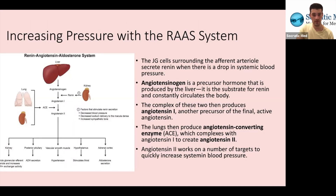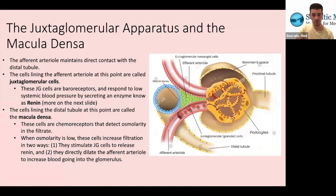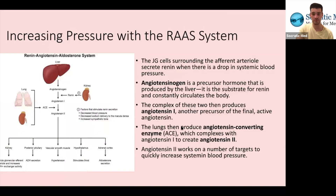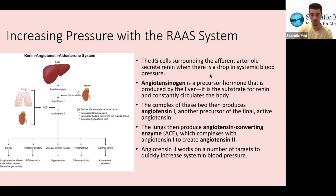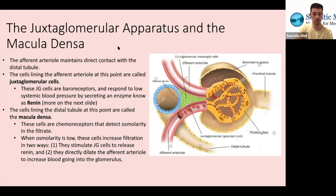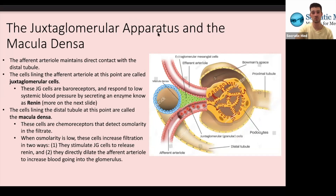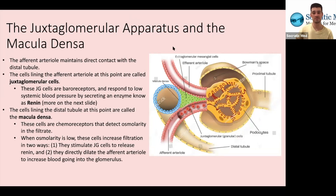These are a little bit out of order, so I'm going to do this one first and then hop back to the other one, since we're already talking about the renin-angiotensin system. The juxtaglomerular apparatus and the macula densa are two concepts we should probably know before discussing the renin-angiotensin system, so we'll cover those first.